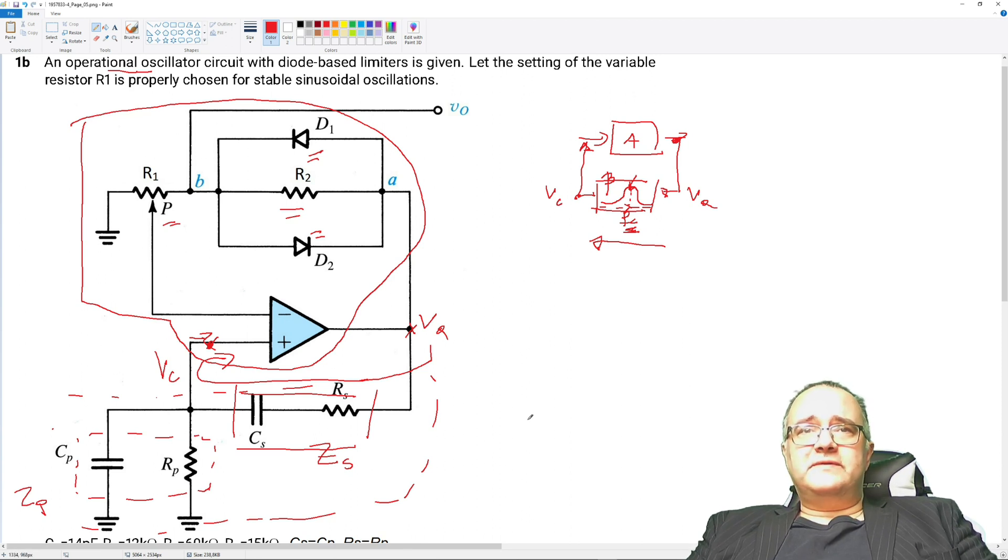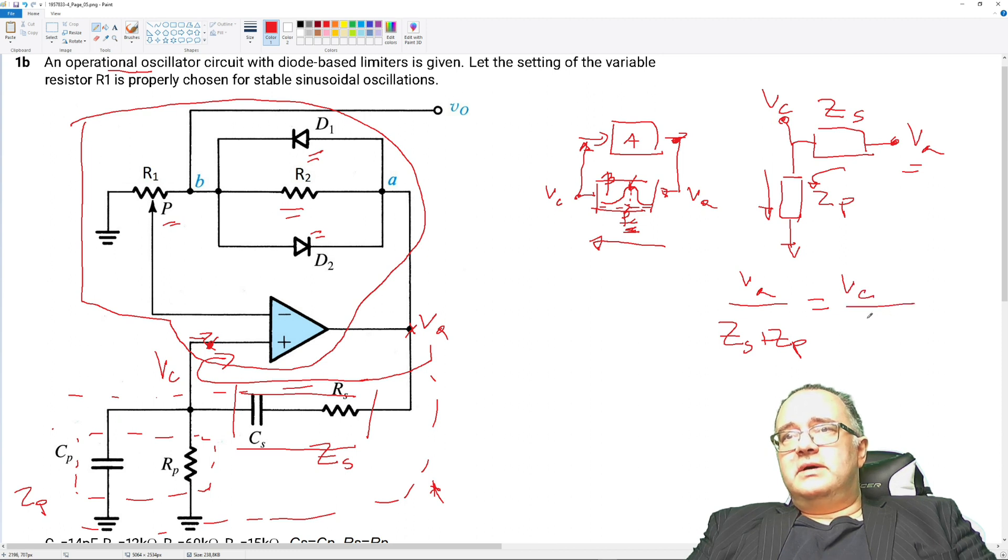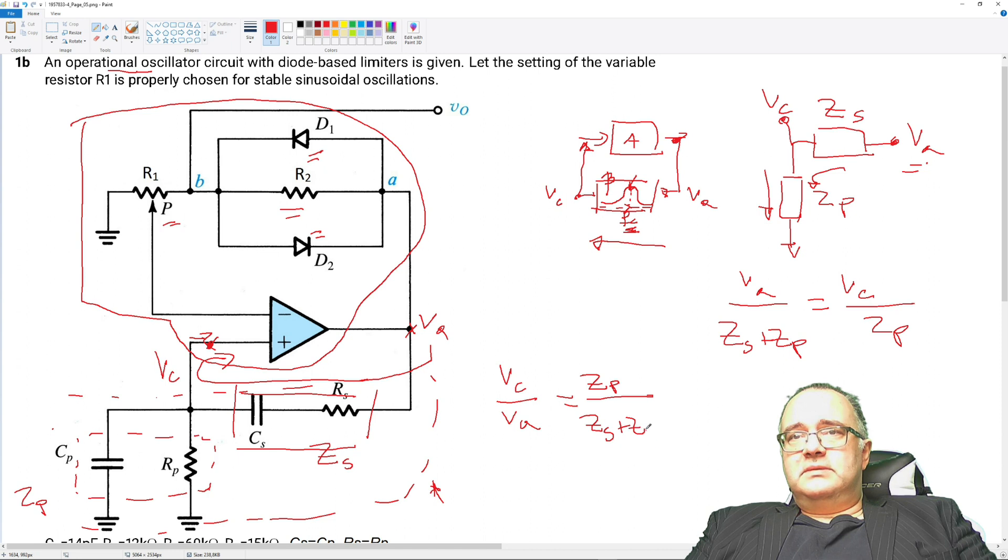So let's see what is the transfer of the frequency selective network from point VA to VC. Now I can redraw this circuit as impedance divider with impedances, so the input will be VA and the output will be VC and the impedances will be Zs and Zp. So from VA, writing the current, this direction is VA divided by Zs plus Zp equals this current which is the same current, VC divided by Zp. So now I am interested from here to here, which is the ratio VC divided by VA, and this is Zp over Zs plus Zp.